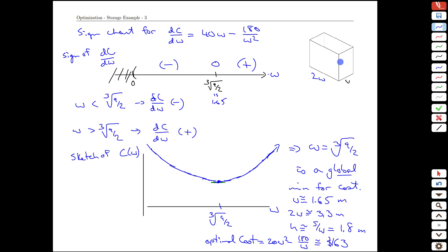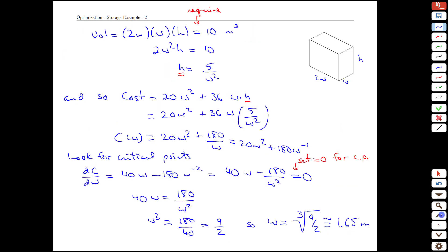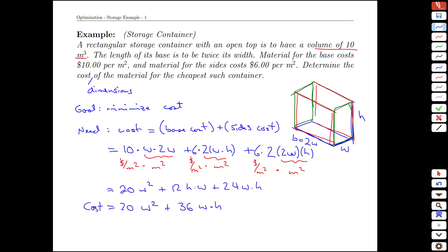That'll be the least expensive box that we can build that has the 10 cubic meter volume based on the particular cost that we use, the 10 meters squared for the base and the 6 meters squared for the sides. Again, notice the steps that we went through, though.